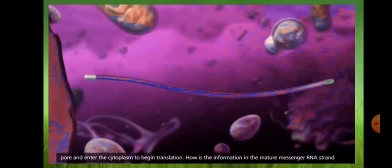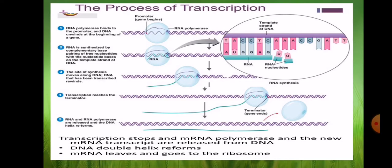So, what we learned: the process of transcription where RNA polymerase binds to the promoter and DNA unwinds at the beginning of a gene. RNA is synthesized by complementary base pairing of free nucleotides with the nucleotide bases on the template strand of DNA. The site of synthesis moves along DNA. DNA that has been transcribed rewinds. Transcription reaches the terminator, RNA and RNA polymerase are released, and the DNA helix reforms. Transcription stops and the new mRNA transcript is released from DNA; the DNA double helix reforms, and mRNA leaves and goes to the ribosome.